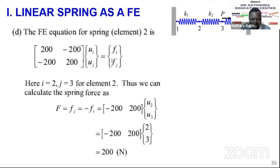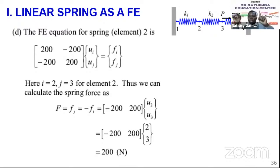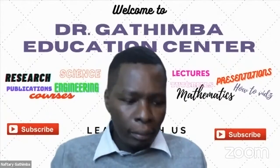These are internal forces, not the external capital-F forces. We substitute the known nodal displacements u2 = 2 mm and u3 = 3 mm into the element equation. By the principle of equilibrium, the internal force at one node must be equal and opposite to the other, so the summation of the two nodal forces equals zero. Substituting, the internal force in spring 2 is 200 Newtons.